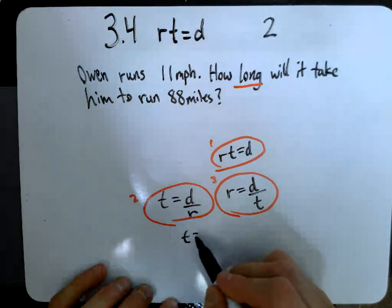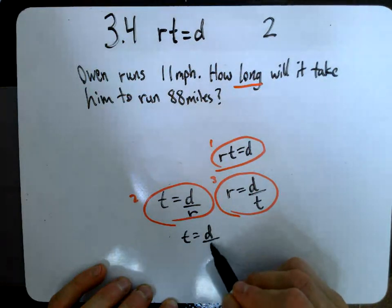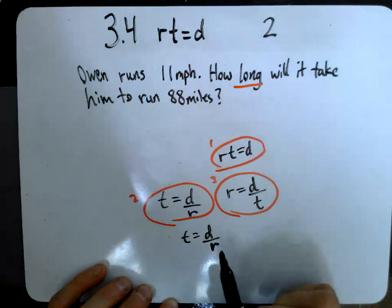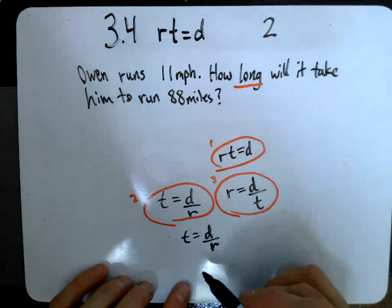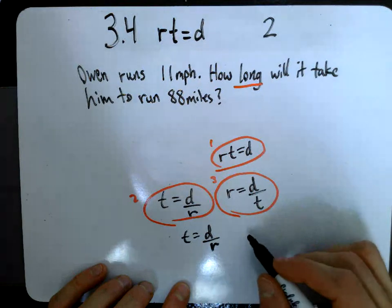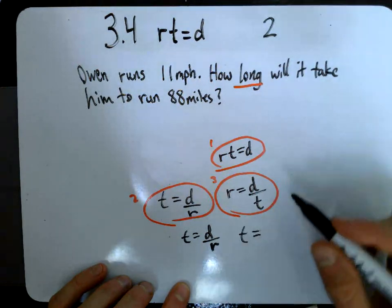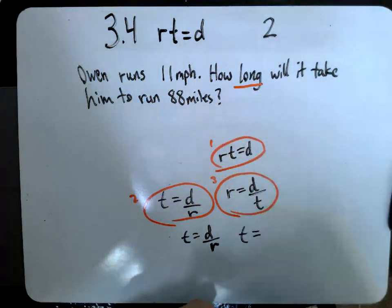All right, so I'm going to write T equals D divided by R. And now I'm going to look at the numbers that I'm given and just plug them into this equation. So instead of T equals D over R, I'm going to write T equals, now what's my distance that I'm given?